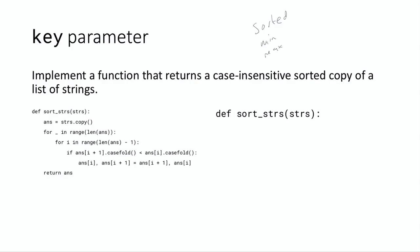The problem says: implement a function that returns a case-insensitive sorted copy of a list of strings. So you're given a list of strings, you want to sort them, but you want to be case insensitive — it doesn't matter if you have a capital letter or lowercase letter, it should still sort as appropriate.